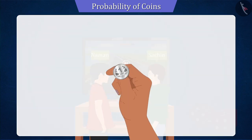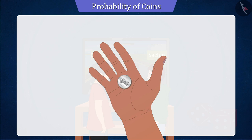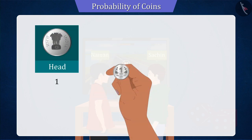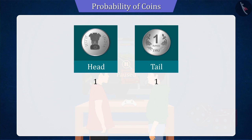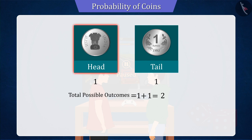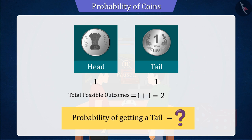Let's first look at the outcomes when the coin is tossed. As you can see, when the coin is tossed, it gives only two possible results, which will be either the head or the tail. But now the question is, what is the probability of getting the tail?